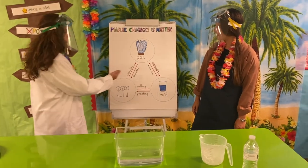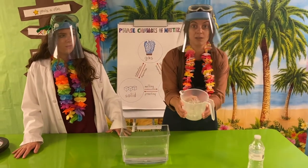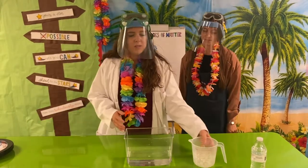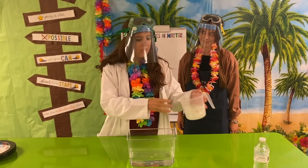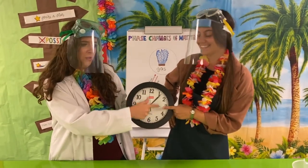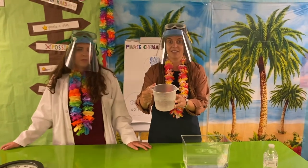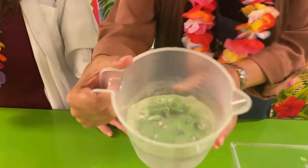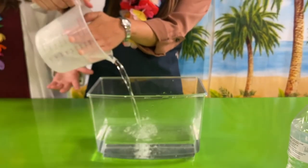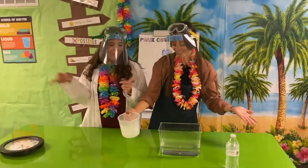En nuestro siguiente experimento vamos a ver cómo es el proceso de fusión en el que pasamos de sólido a líquido. In the next experiment, we are going to see how we pass from solid to liquid — it's called melting. Primer paso. Necesitamos agarrar los hielos que hicimos en el experimento anterior y ponerlos bajo el sol. Segundo paso. Tienes que esperar un buen rato mientras el hielo está bajo el sol. So you have to wait some time under the sun and you will see what happens. Tercer paso. Veréis como los hielos se han ido derritiendo y se ha formado agua, es decir, ha pasado de sólido a líquido. You see how the ice is melting, so it's passed from solid to liquid. That's what happened. You can try.